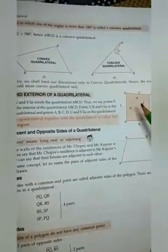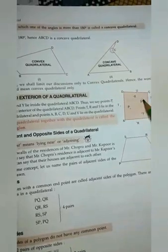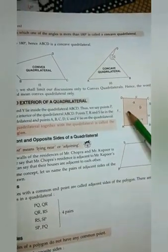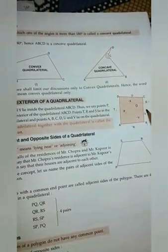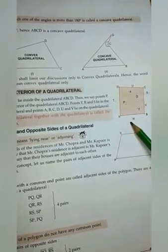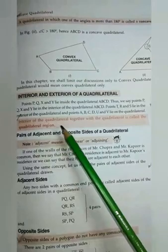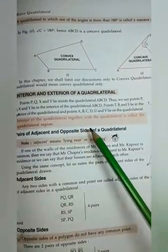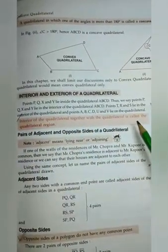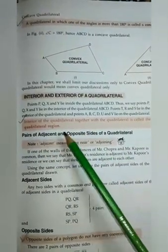Then interior and exterior of a quadrilateral. Here you see P, Q, X, Y are interior points, and the exterior points are S, T, R. The interior of the quadrilateral together with the quadrilateral itself is called the quadrilateral region.